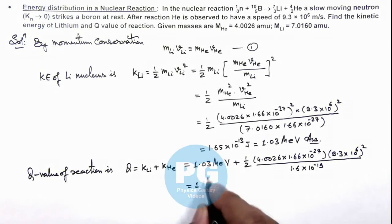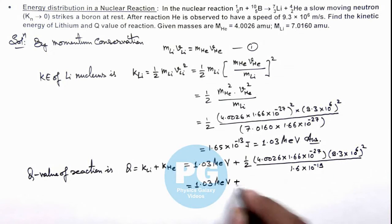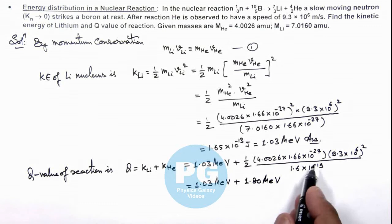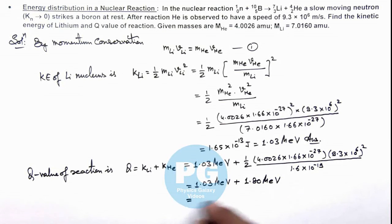the kinetic energy of lithium is 1.03 MeV. On simplifying this, it gives us 1.80 MeV, that is the kinetic energy value of the emitted helium nucleus. So on summing up the two values, we are getting the final Q value of the nuclear reaction is 2.83 MeV. That is the final result of this problem.